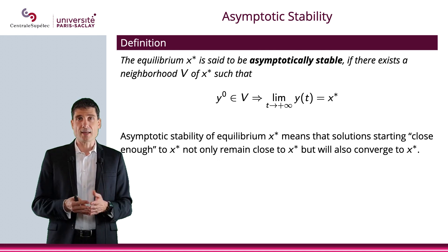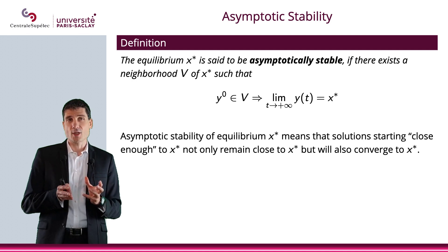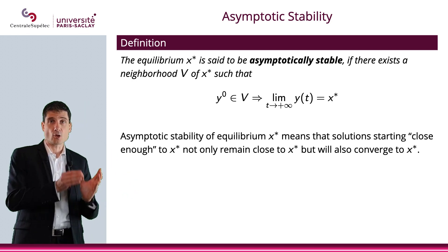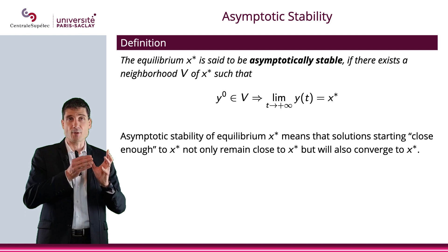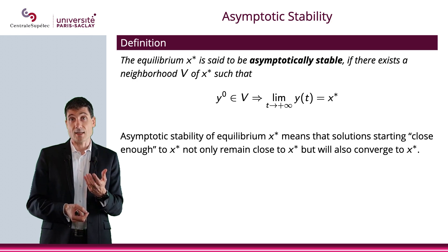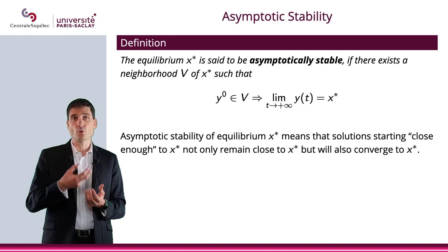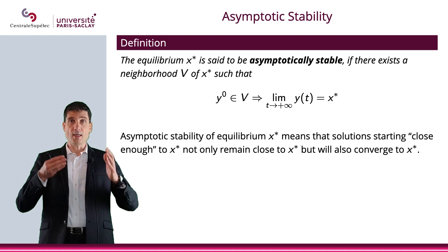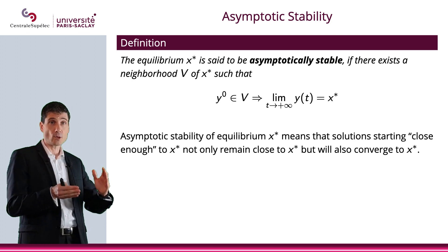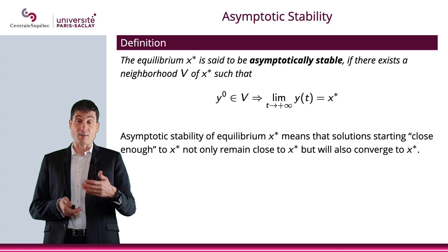You can be even better than Lyapunov stable — you can require a little bit more. If the equilibrium has the property that there is a neighborhood of x star such that when the initial condition y0 is in that neighborhood, then the limit of the solution as t goes to plus infinity will be x star, that is called asymptotic stability. Not only do you stay close to x star, but you actually converge to x star.